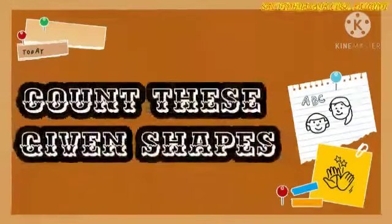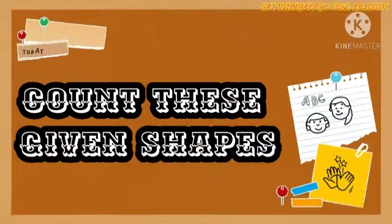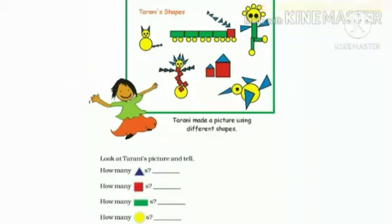Next topic is count these given shapes. Look at this picture. Tarani made this picture using different shapes. Like triangle, rectangle, square, and circle. Now, we have to count these shapes. First question. How many triangles?